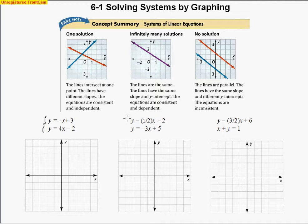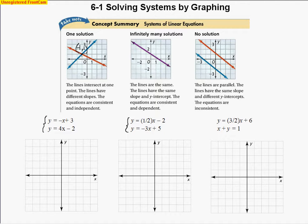We have three different types of answers we could end up getting: either one solution, which is what we'll typically get on tonight's problems, or infinitely many solutions, or no solutions. One solution represents where the two lines intersect — that's what a system is looking for, a common value that each equation shares. In this example, that point is negative one, positive one — the only point these two lines share.